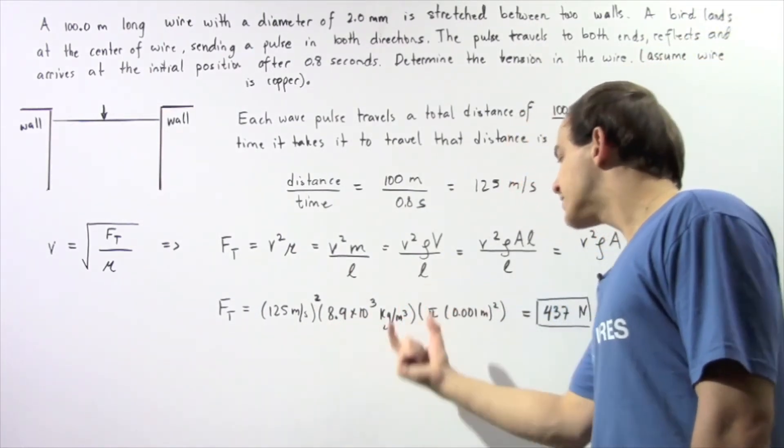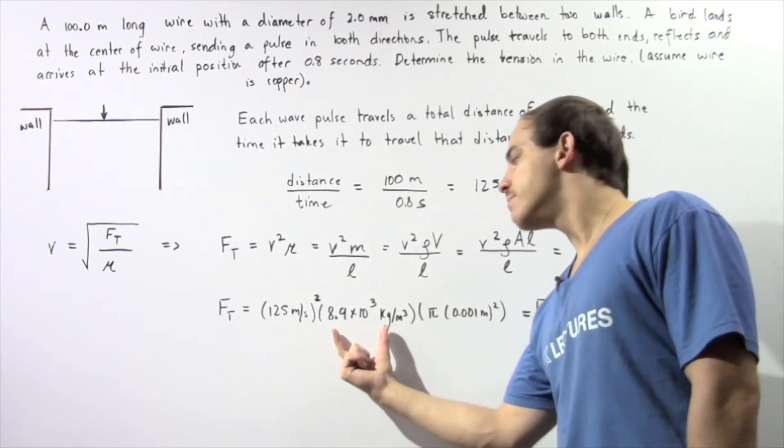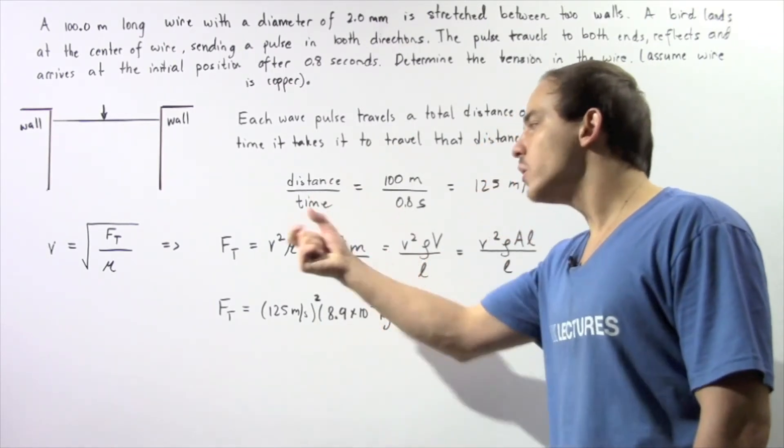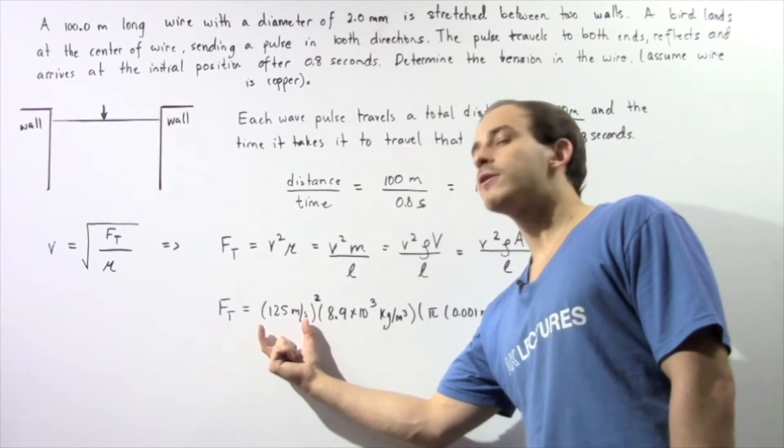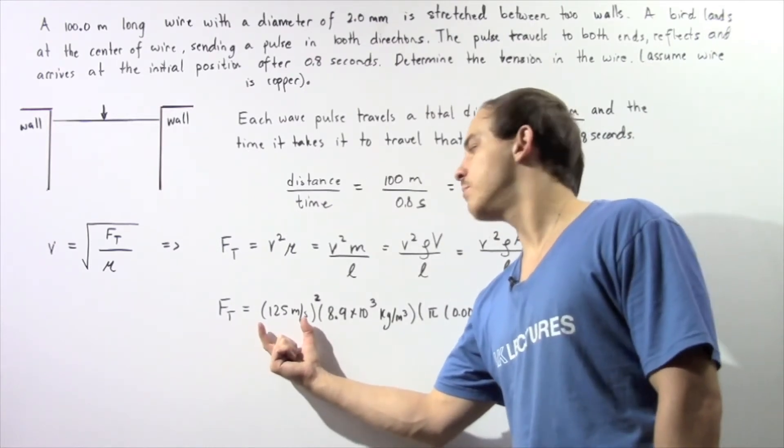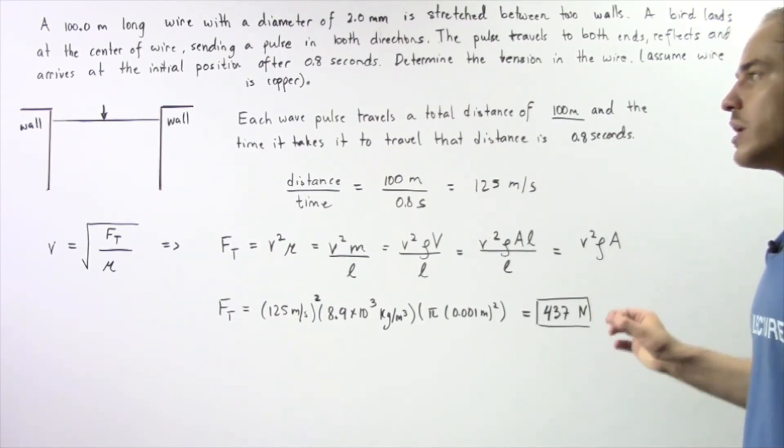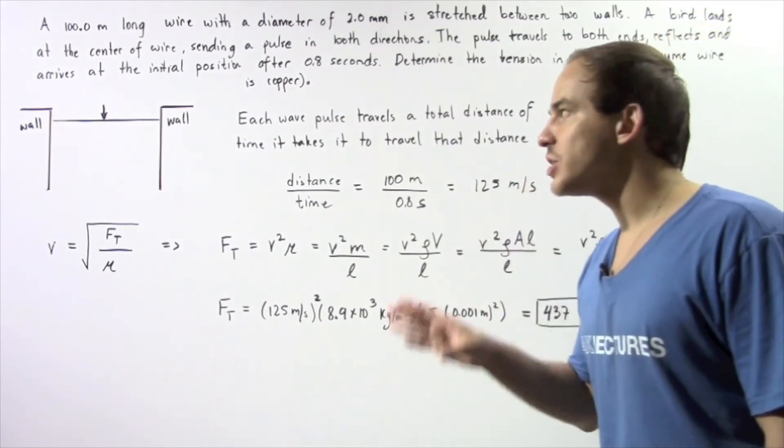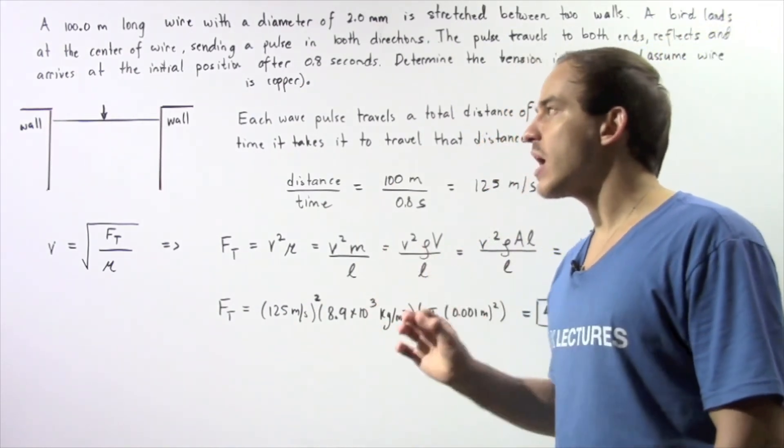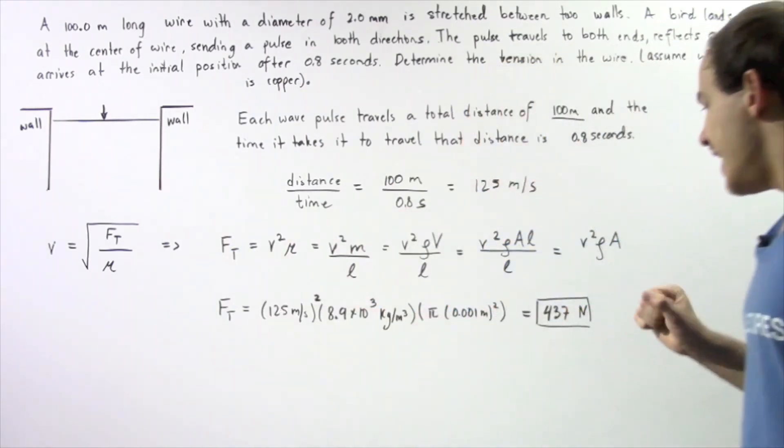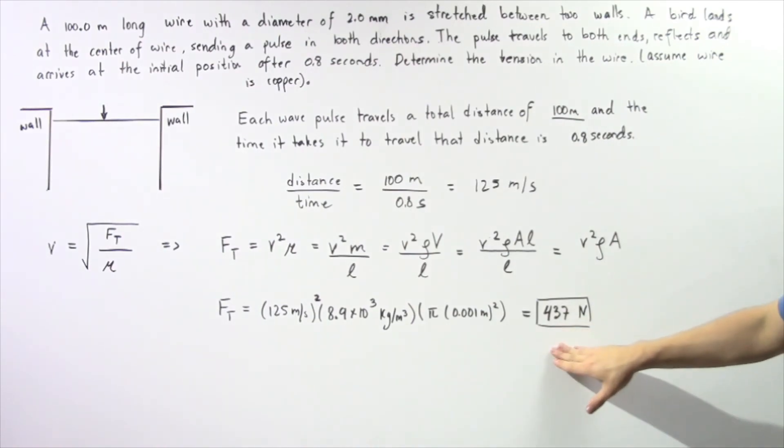Now that quantity is then multiplied by the density, which is multiplied by the square of our velocity of the propagating pulse. So we plug these into the calculator and we get about 433 Newtons. So the tension in our wire due to our propagating wave is given by this quantity.